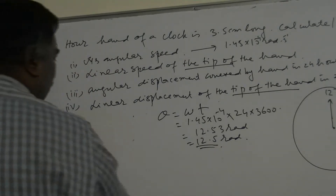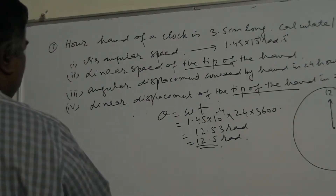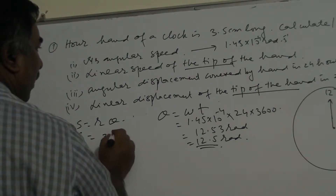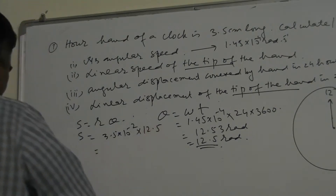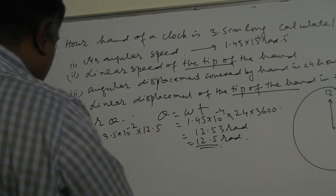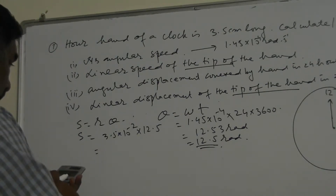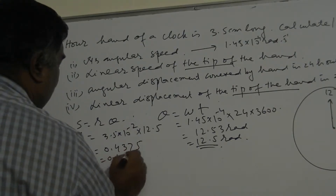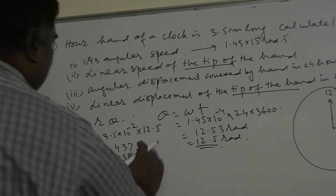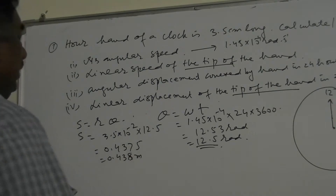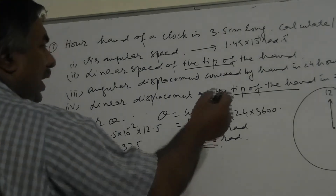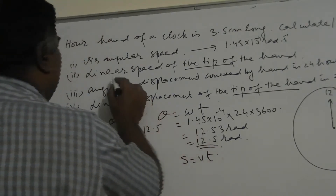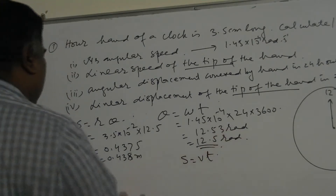Now for the linear displacement of the tip in 24 hours: since we have found theta, we use S equals R times theta. R is 3.5 into 10 to the power minus 2 meters and theta is 12.5, giving S equals 0.4375 meters, or approximately 0.438 meters. Alternatively, linear displacement equals linear speed times time: V times T with V equals 5.09 into 10⁻⁶ and T equals 24 into 3600, giving the same distance.